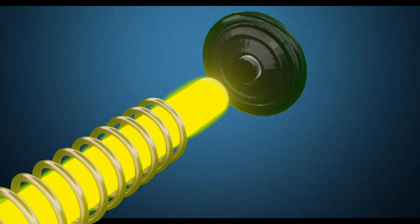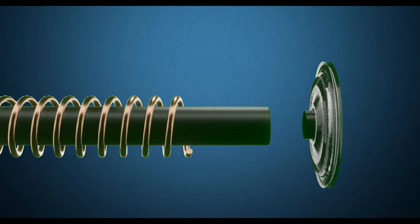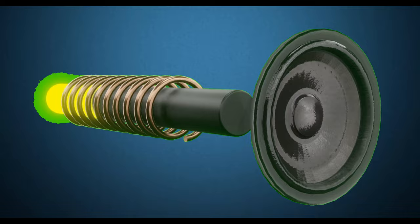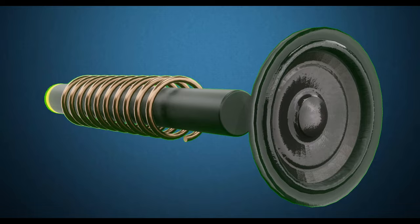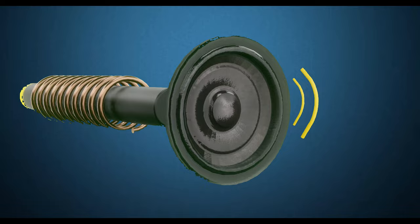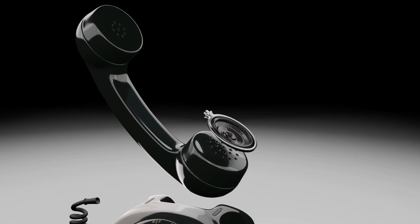In the listening device, an electromagnet is placed behind the diaphragm which behaves like a magnet when current passes through it. An iron bar connected to the diaphragm is attracted to the electromagnet periodically. When electric signals come from the speaking device to the listening device, the electromagnet magnetizes according to those signals. Due to this magnetization, the iron bar and diaphragm vibrate in the same pattern as the electric signals from the speaking device, producing sound.